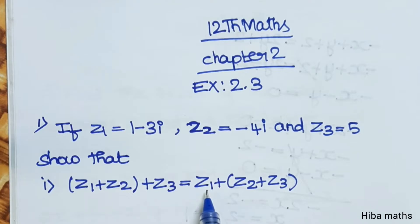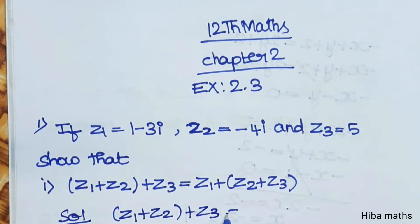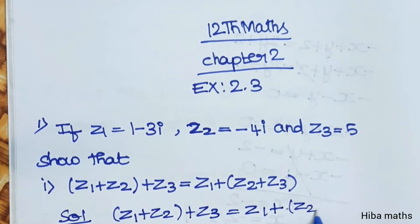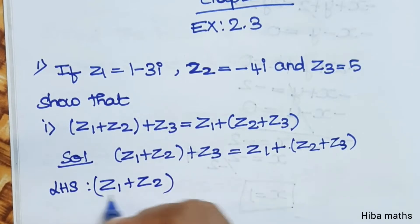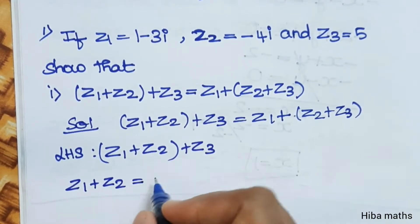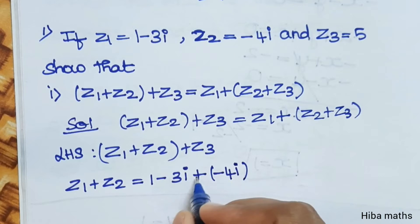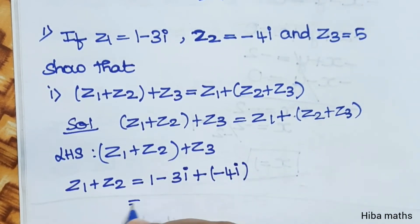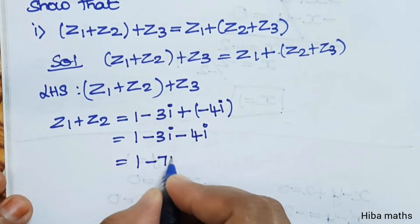LHS and RHS. First step: solve LHS, which is z1 plus z2 plus z3. First compute z1 plus z2. z1 value is 1 minus 3i, plus z2 which is minus 4i. Adding the line: 1 minus 3i plus minus 4i, so the answer is 1 minus 7i.